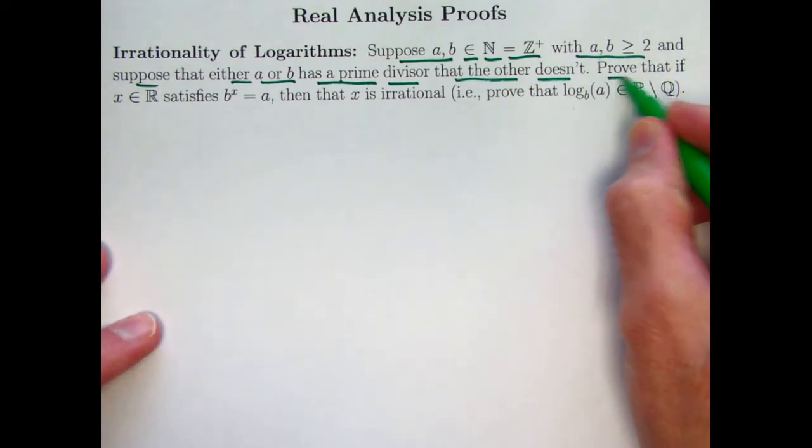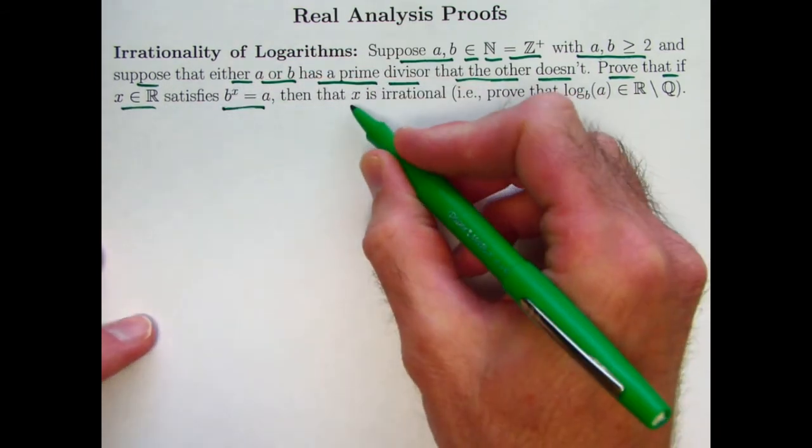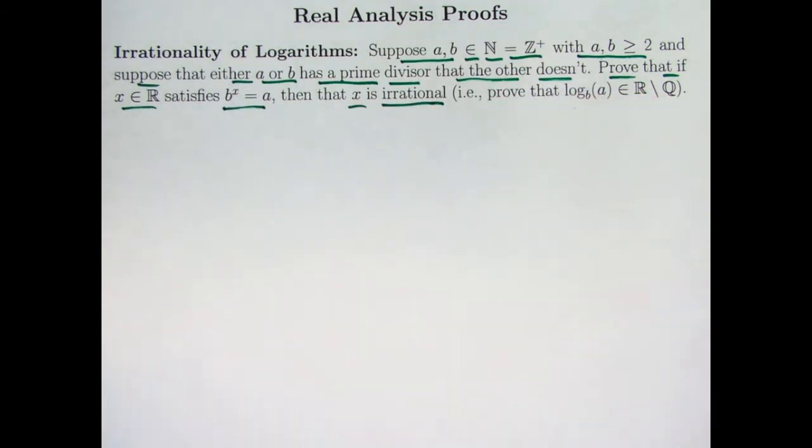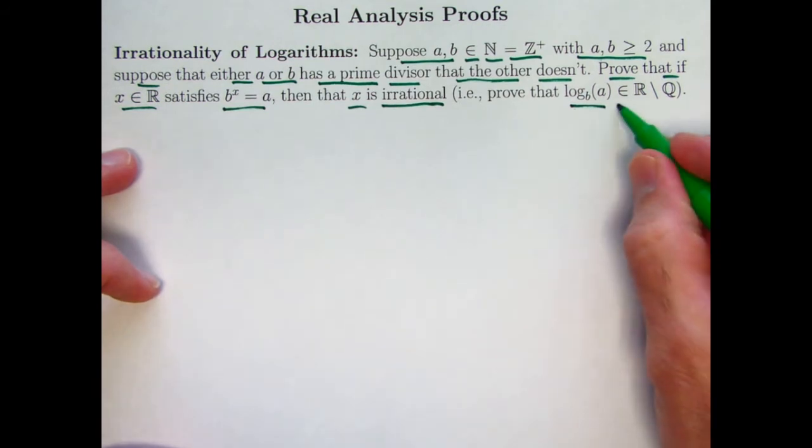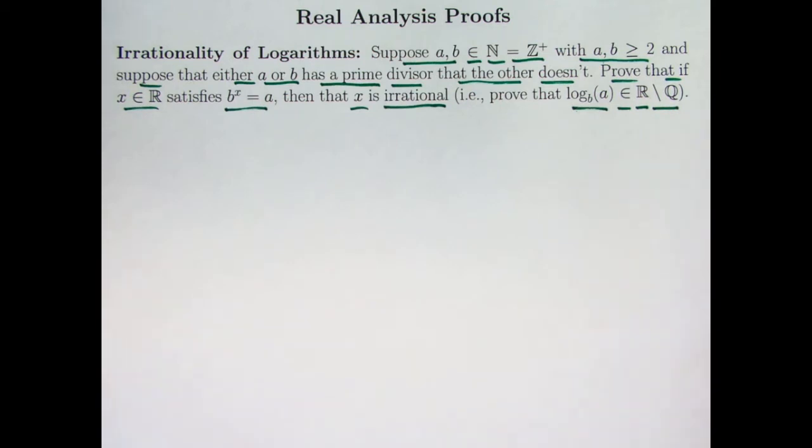First, prove that in this situation, if you've got a real number that satisfies the equation b to the x equals a, then that number must not be rational. It must be irrational. Such a number would be called log base b of a, and it would therefore be proving that it's an element of the set of real numbers, but not the rationals. This is a set minus notation, R set minus Q. Elements of this are real, but not rational. They are what we call irrational.